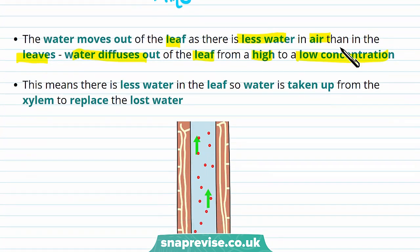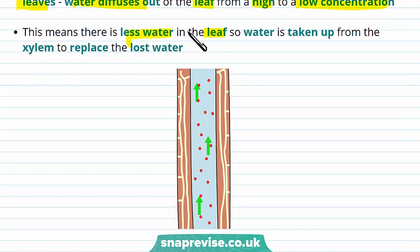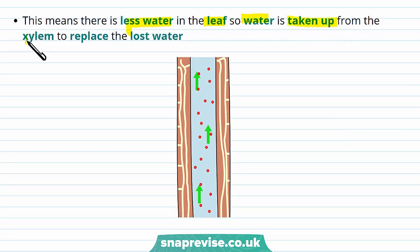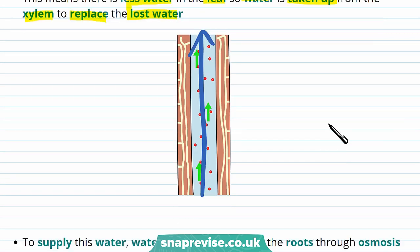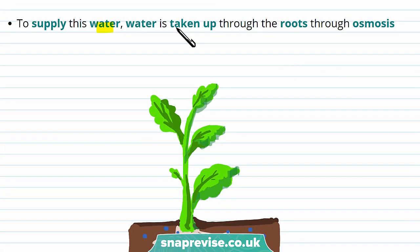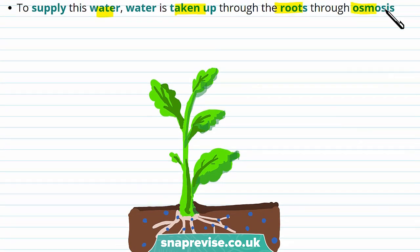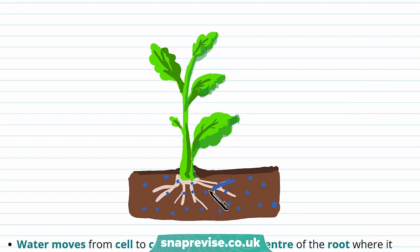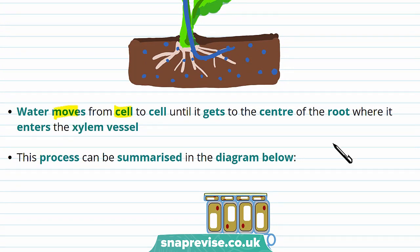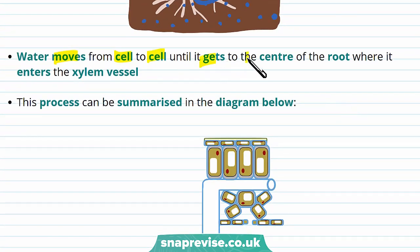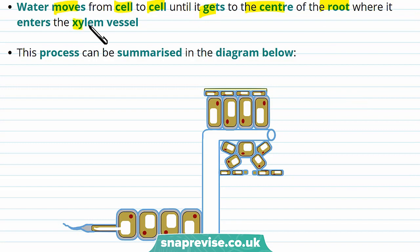This means there is less water in the leaf as some of it has evaporated, so water is taken up from the xylem to replace the lost water and moves up the xylem to the leaves. To supply this water, water is taken up through the roots through osmosis. There is a lower concentration in the roots than in the soil, so water is taken up. This water moves from cell to cell until it reaches the centre of the root, where it enters the xylem vessel.